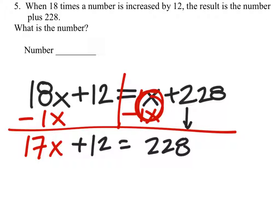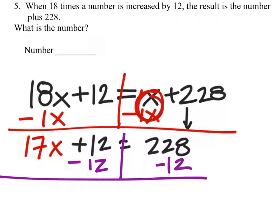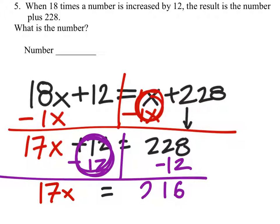Now we have the x's on the left, but we also have that plus 12. It doesn't have an x, so it's an unlike term. We've got to get rid of it and essentially move it to the other side. So I can do that by subtracting 12. But if I do it to one side, I've got to do it to both. That becomes a 0. I still have my 17x's. This is equal to 228 minus 12. So 8 minus 2 is 6, 2 minus 1 is 1, and we've got 216.